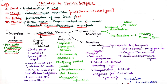Next are organic acids and alcohols — very important, with many exam questions. Number one is Citric acid, which we extract and obtain from the fungi Aspergillus niger. The second one is Acetic acid, which we obtain from bacteria by the name Acetobacter aceti.